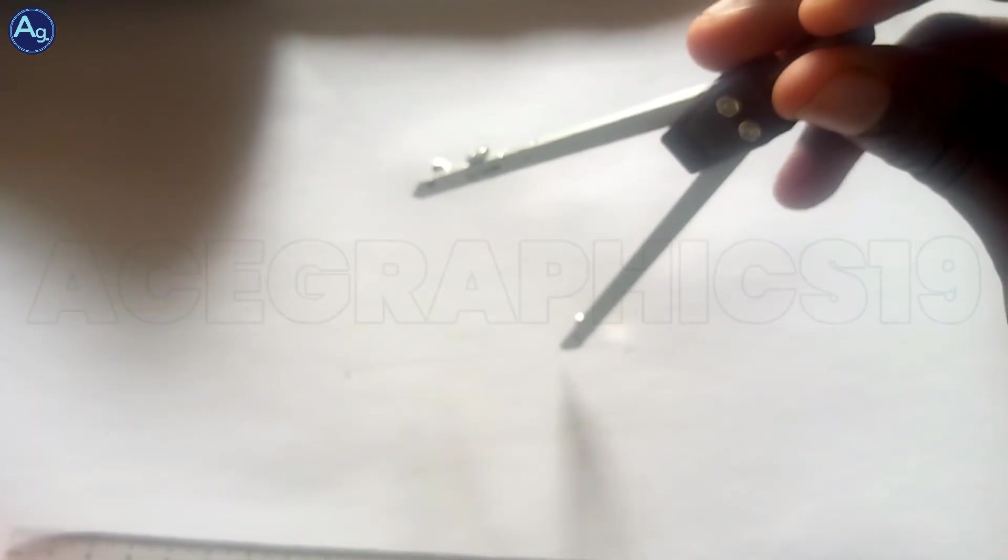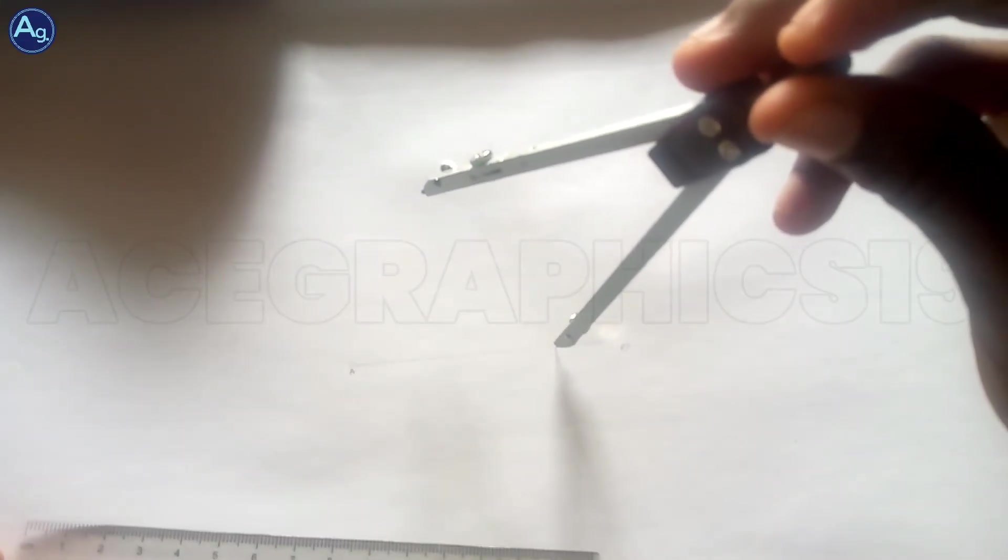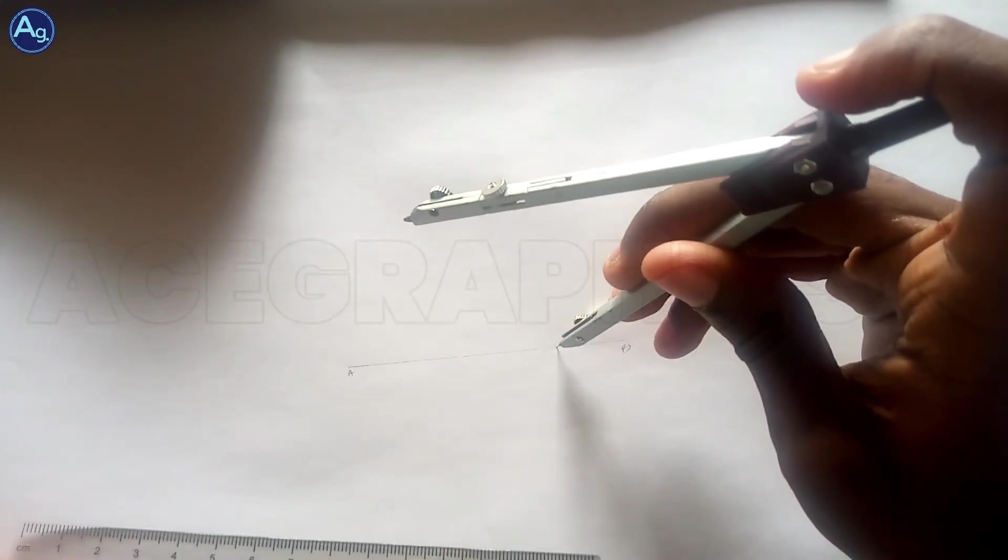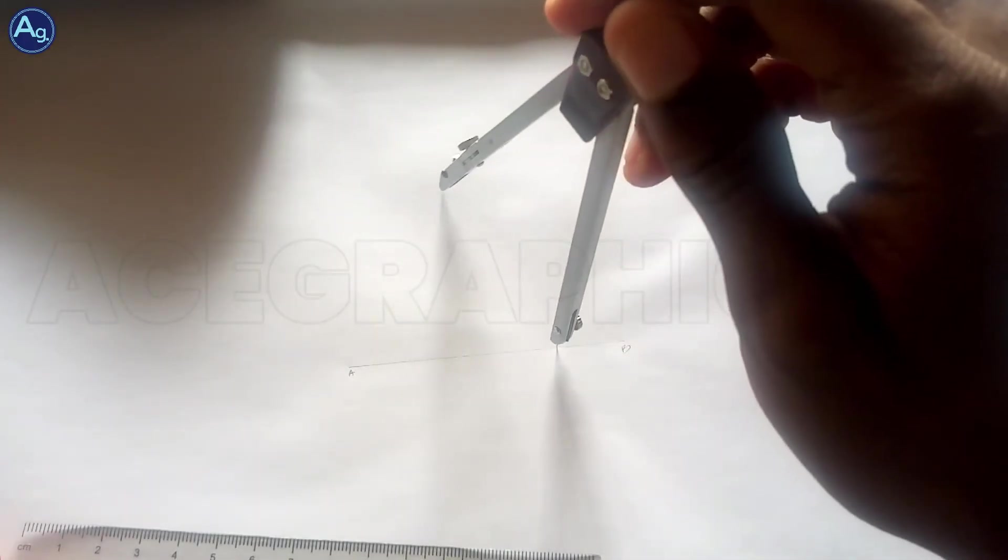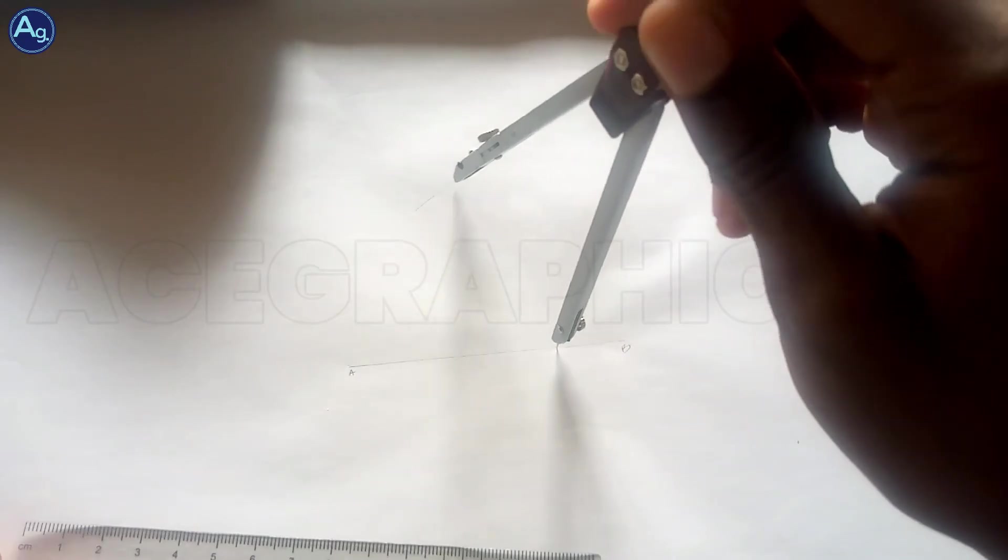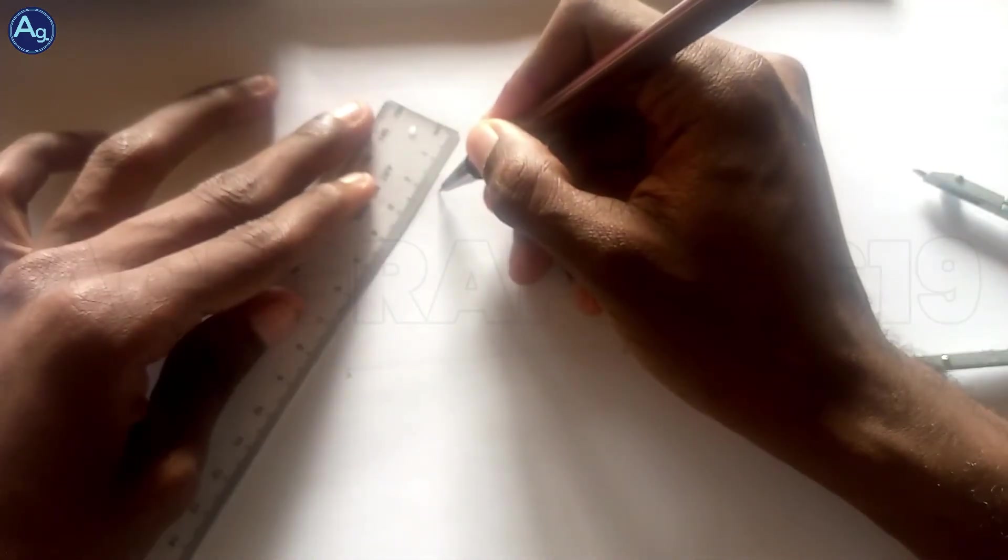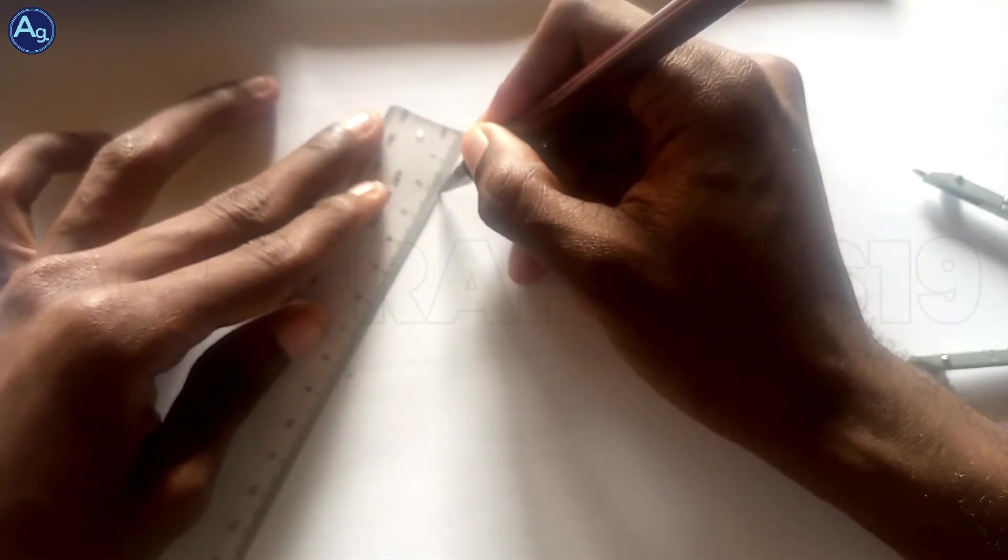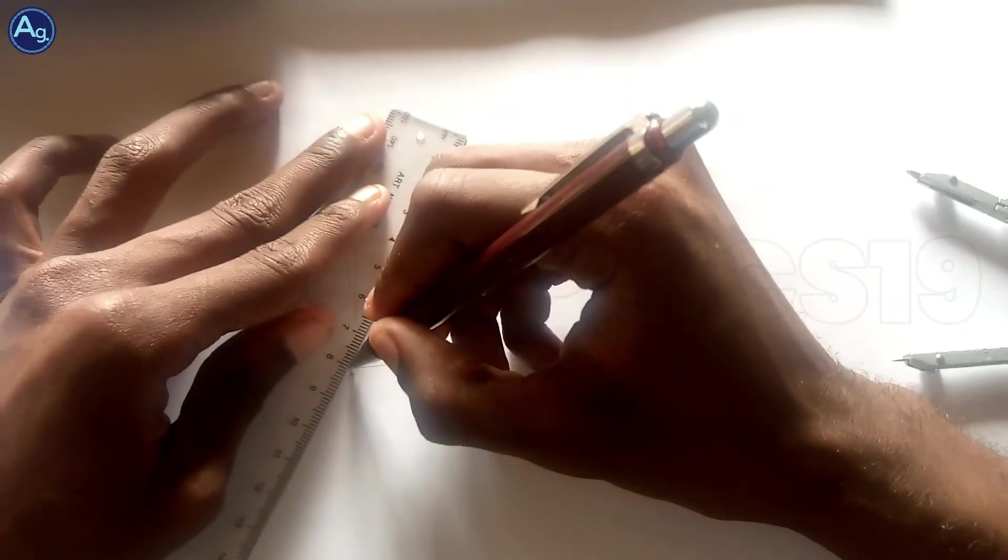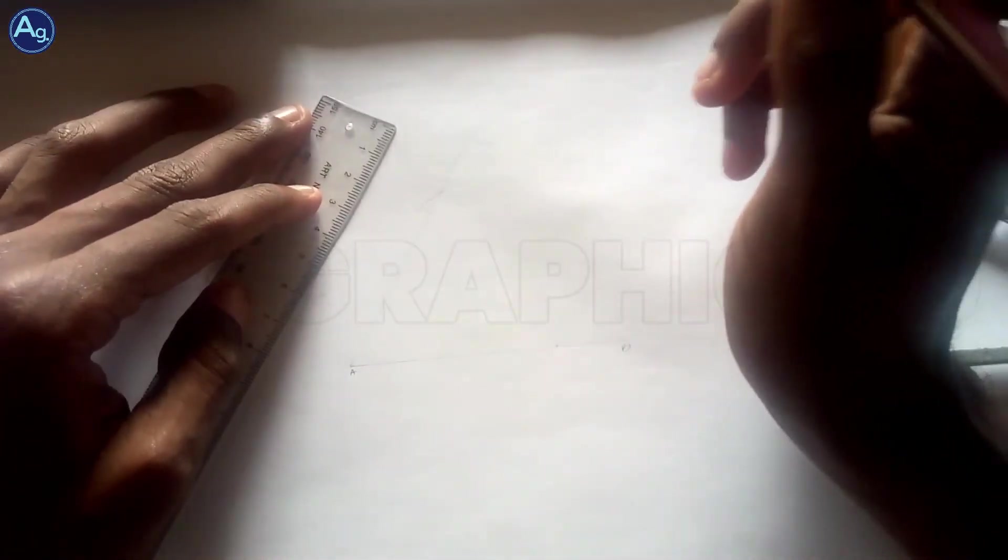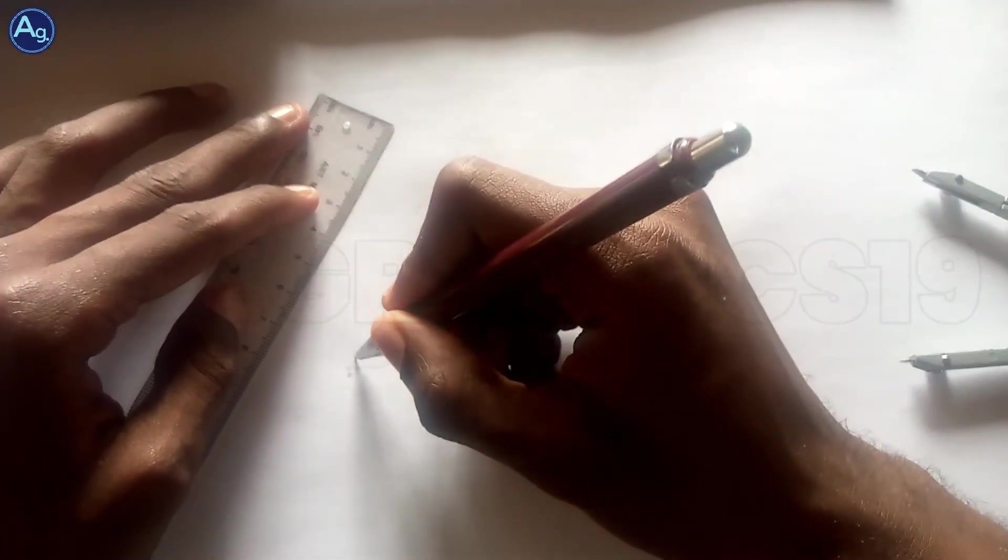Come to this particular point, draw a very big arc and cut it with the same radius. Now from this point to this point is going to form 60 degrees. Here you have your 60 degrees.